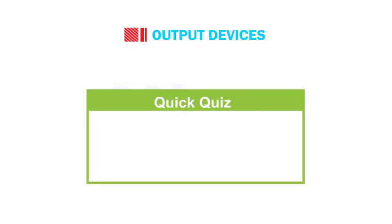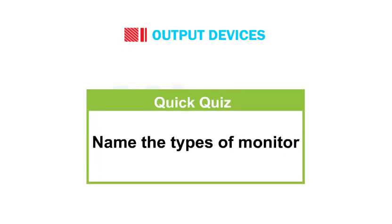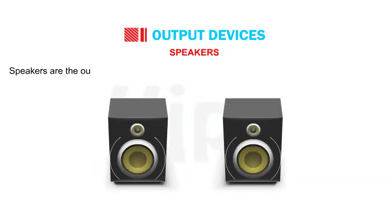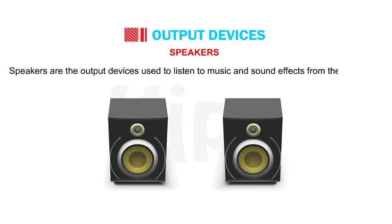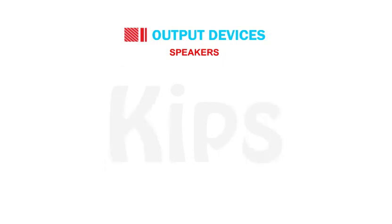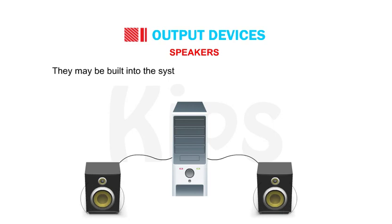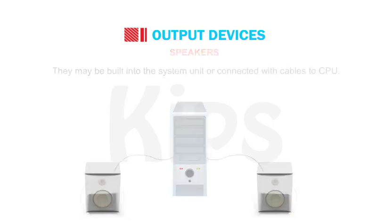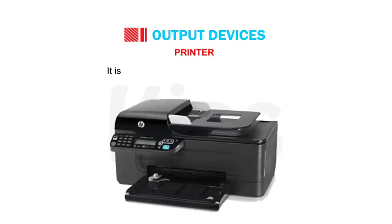Let us have a quick quiz. Name the types of monitor. Speakers are the output devices used to listen to music and sound effects from the computer. They may be built into the system unit or connected with cables to the CPU.